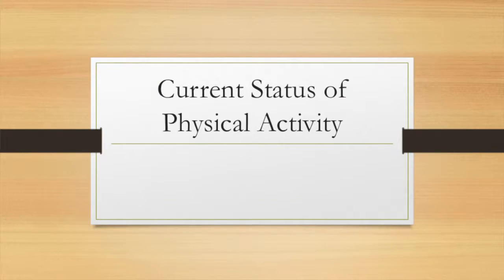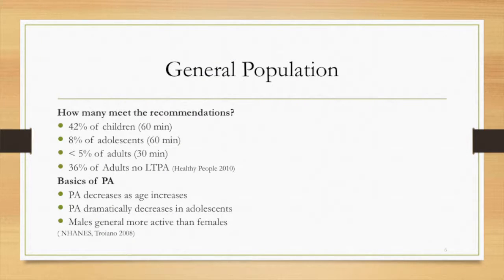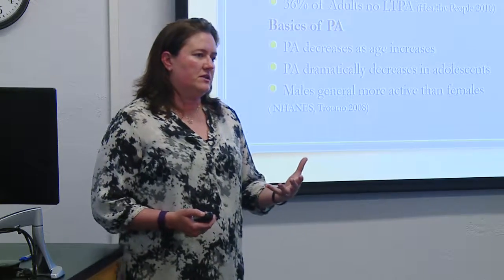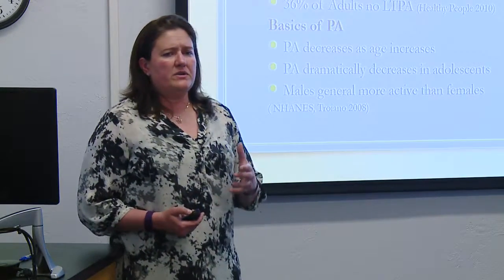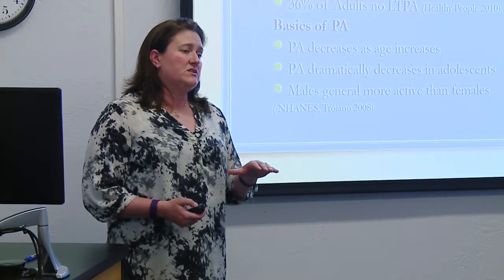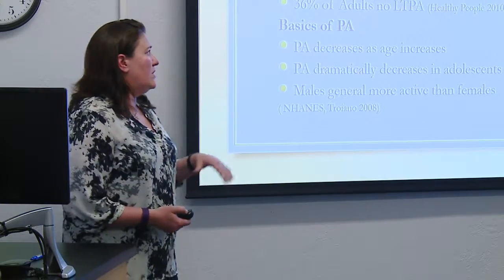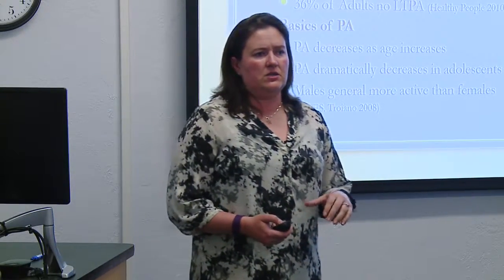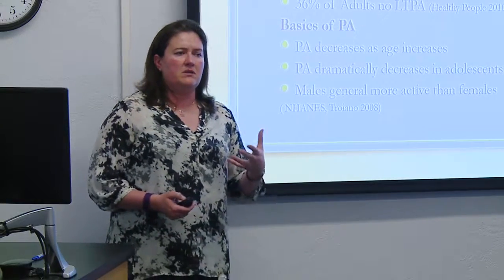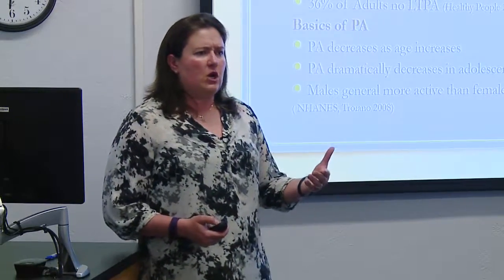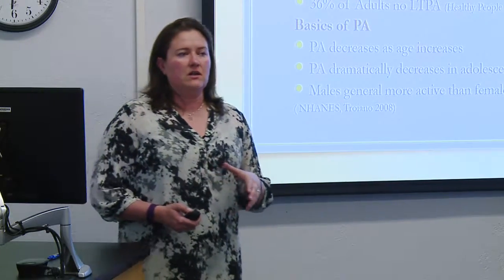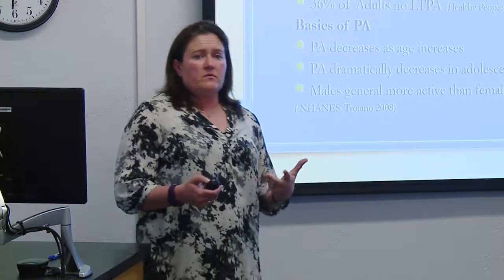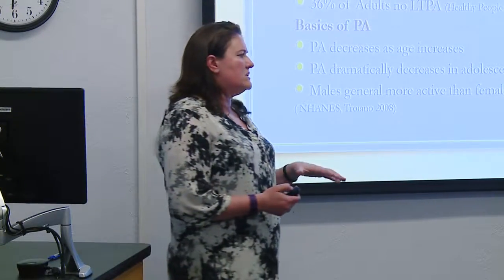What does this mean in terms of physical activity? Looking at the general population, we see that 42% of children get the recommended amounts of physical activity — which is really low, since 60 minutes a day is typically not achieved. We see it dramatically decrease in adolescence, especially among females, down to about 8% in adolescence. Then there is an even further decrease in adulthood: less than 5% of the adult population meets the recommended guidelines of 150 minutes a week of moderate physical activity or 75 minutes of vigorous physical activity, along with bone strengthening, muscle strengthening, and aerobic activity.